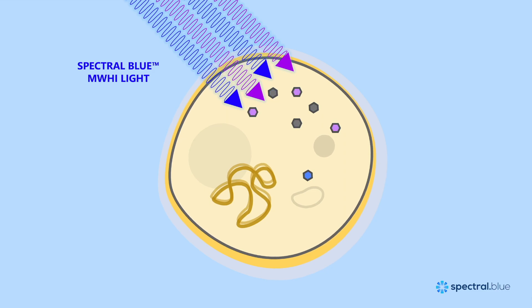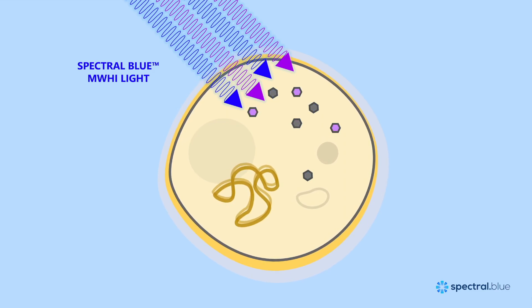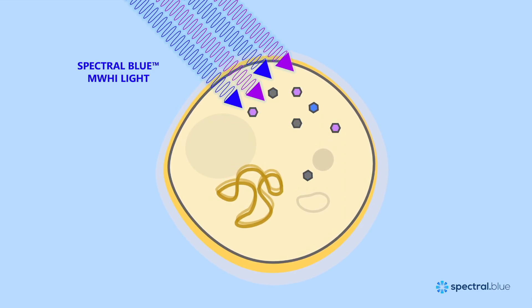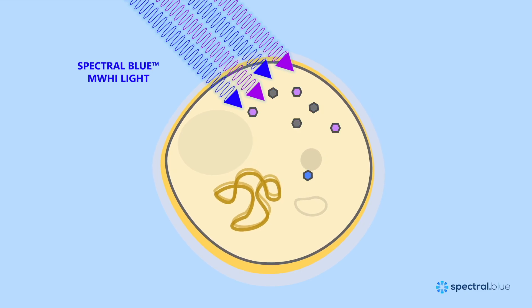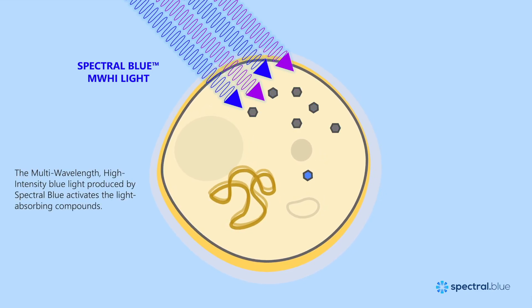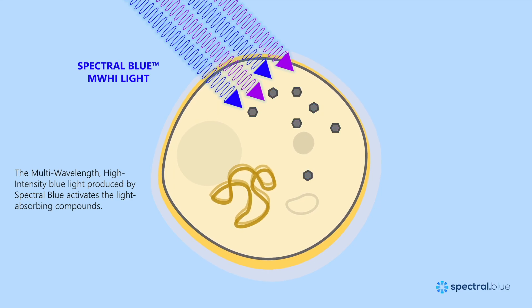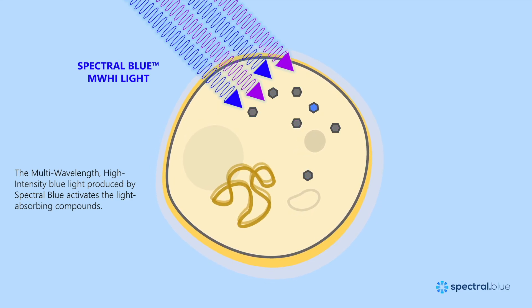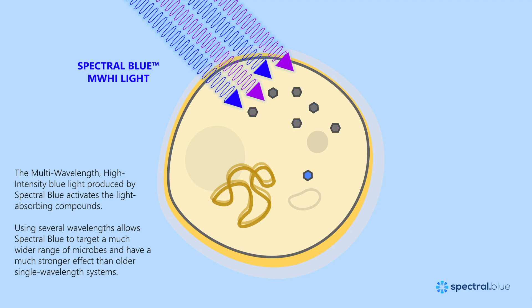What happens when we switch on the Spectral Blue devices and start illuminating the cell? The high-intensity blue light activates the light-absorbing compounds. Because Spectral Blue light uniquely contains several wavelengths of blue light, it can activate several different compounds at the same time. This capability allows Spectral Blue to both target a much wider range of microbes and have a much stronger effect than older, single-wavelength systems that can only affect one compound.